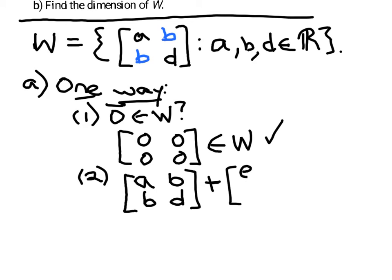So I'll use E, F. This entry down here would have to match, so that needs to also be F. This entry could be any number, so I'll put G here. So I've got two symmetric 2 by 2 matrices.